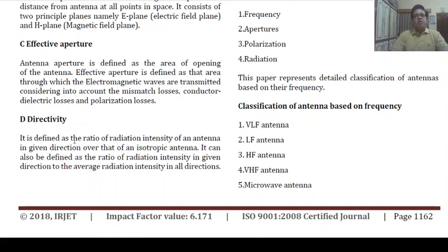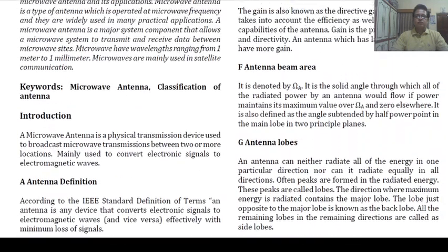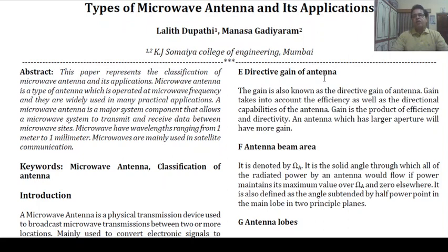Directivity is defined as the ratio of radiation intensity of an antenna in a given direction over that of an isotropic antenna. It can also be defined as the ratio of radiation intensity in a given direction to the average radiation intensity in all directions. Directive gain takes into account both the efficiency and directional capabilities of the antenna. Gain is the product of efficiency and directivity, and an antenna with a larger aperture will have more gain.